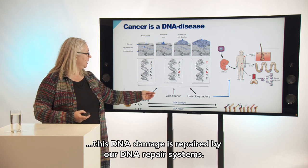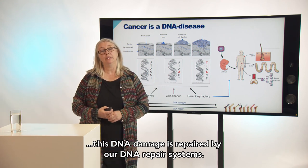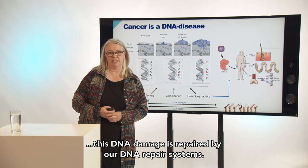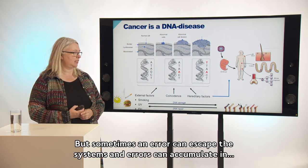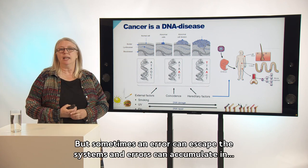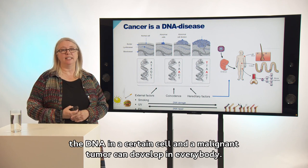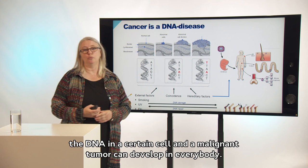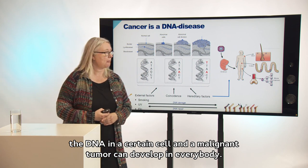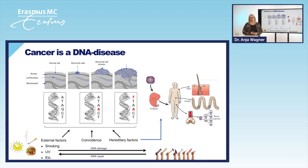Normally this DNA damage is repaired by our DNA repair systems. But sometimes an error can escape these systems and errors can accumulate in the DNA in a certain cell, and a malignant tumor can develop in everybody. However, sometimes hereditary factors play an important role.